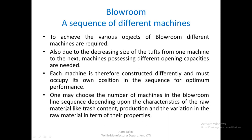One may choose the number of machines in the blow room line depending on characteristics of the raw material such as trash content, production level, and variation in raw material properties. If the trash content is high, more machines may be required, and vice versa. If machines are not required in the sequence, they must not be used because there are chances they may damage the fiber. An optimum number of machines must be selected.